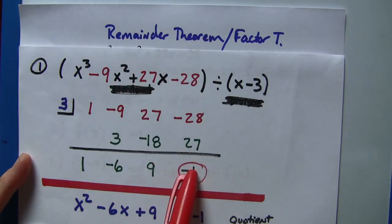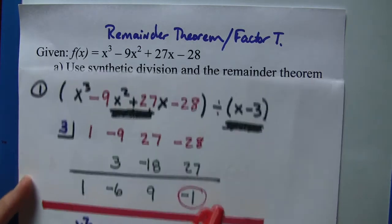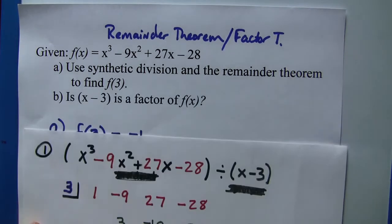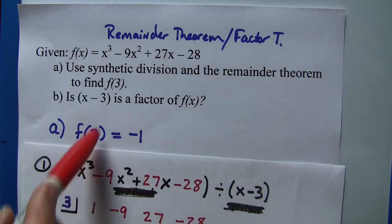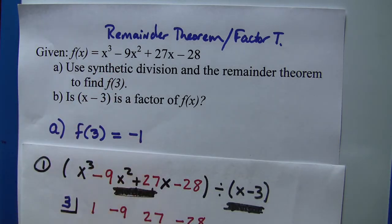However, when we're dealing with the remainder theorem, this is very important, because what this is telling us is that this function at 3 equals -1.